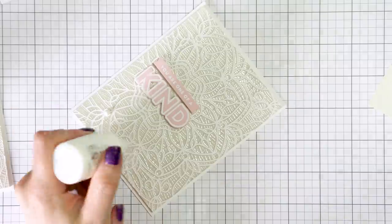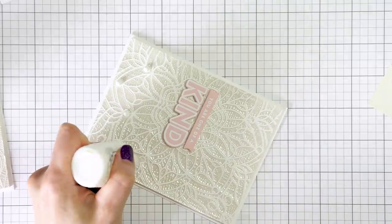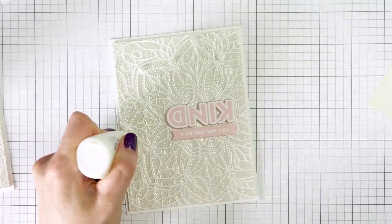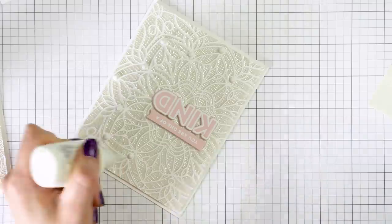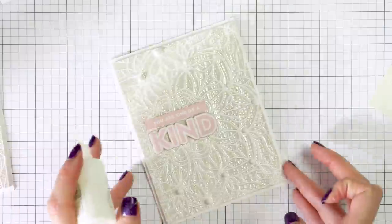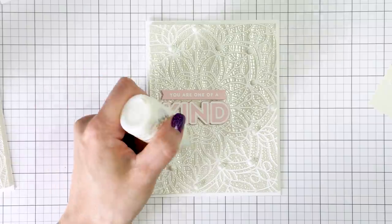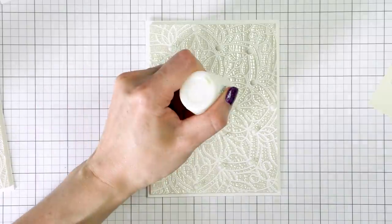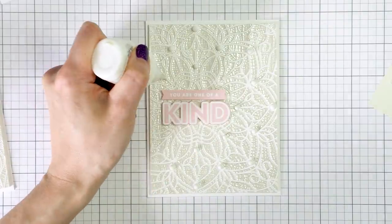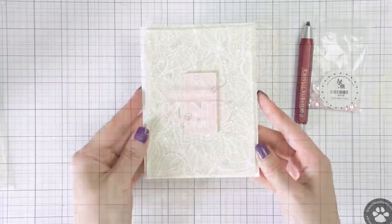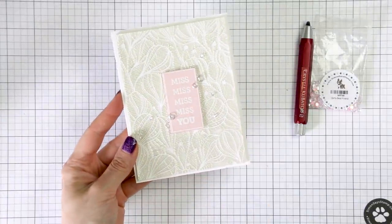I used Nuvo drops in glass white to embellish my one of a kind card and for the other two cards I used sequins from Simon Says stamp girls best friends sequin mix set. I still have loads of backgrounds left over from my experimenting and I have them saved for future projects.